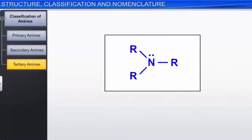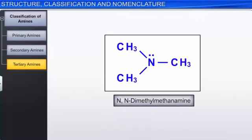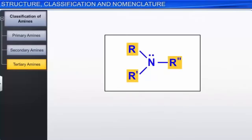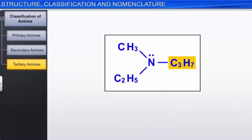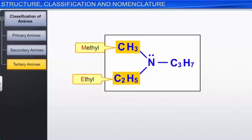In tertiary amines, if all the alkyl groups are the same, then two alkyl groups are treated as side chains and one is named alkanamine. Thus, the following tertiary amine is named N,N-dimethyl methanamine. If all three alkyl groups in tertiary amines are different, then the alkyl group with the greater number of carbon atoms is treated as the principal chain and named as alkanamine. The remaining two alkyl groups with fewer carbon atoms are treated as side chains, listed in alphabetical order. For example, this tertiary amine is named N-ethyl-N-methyl propanamine.